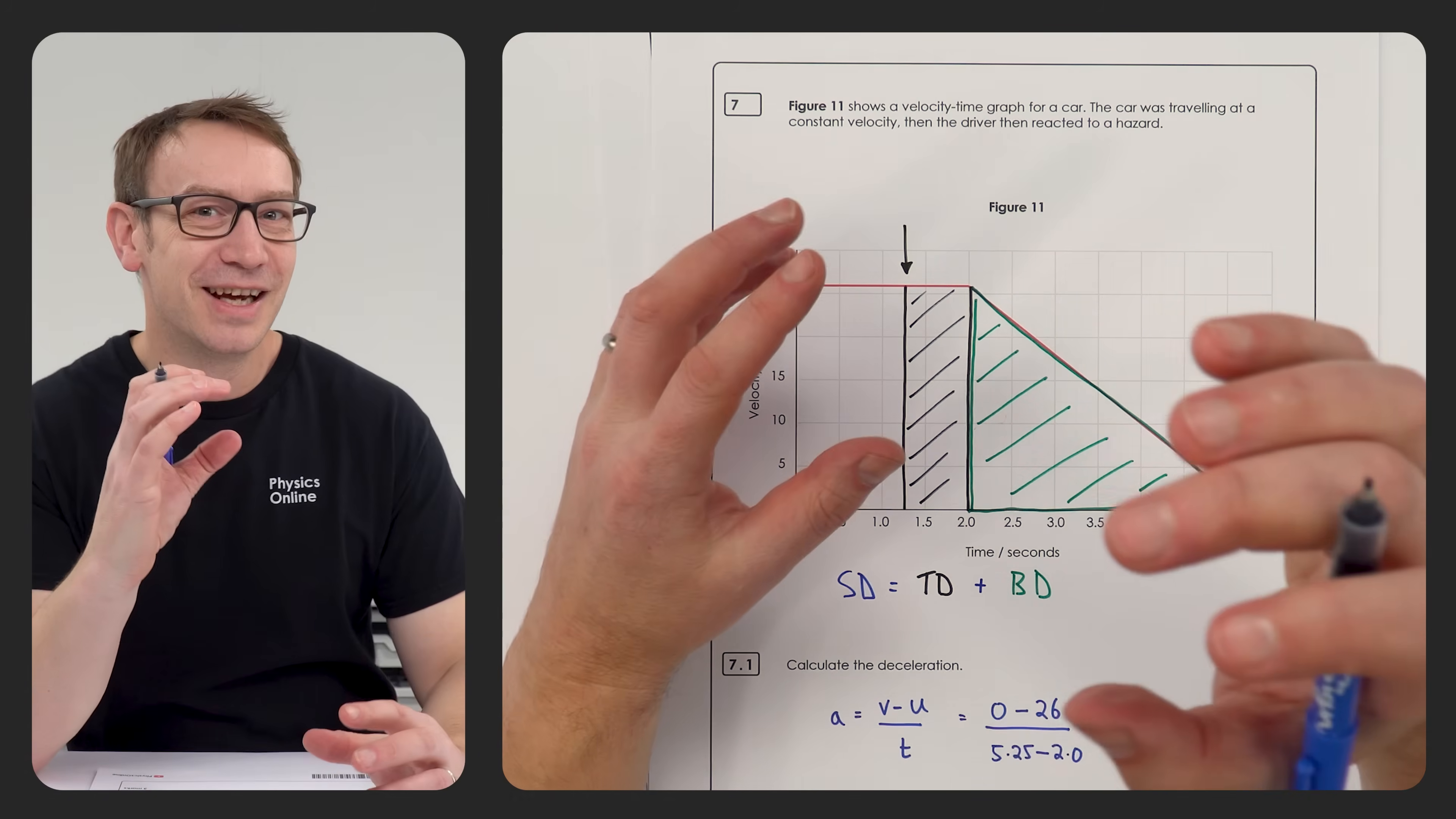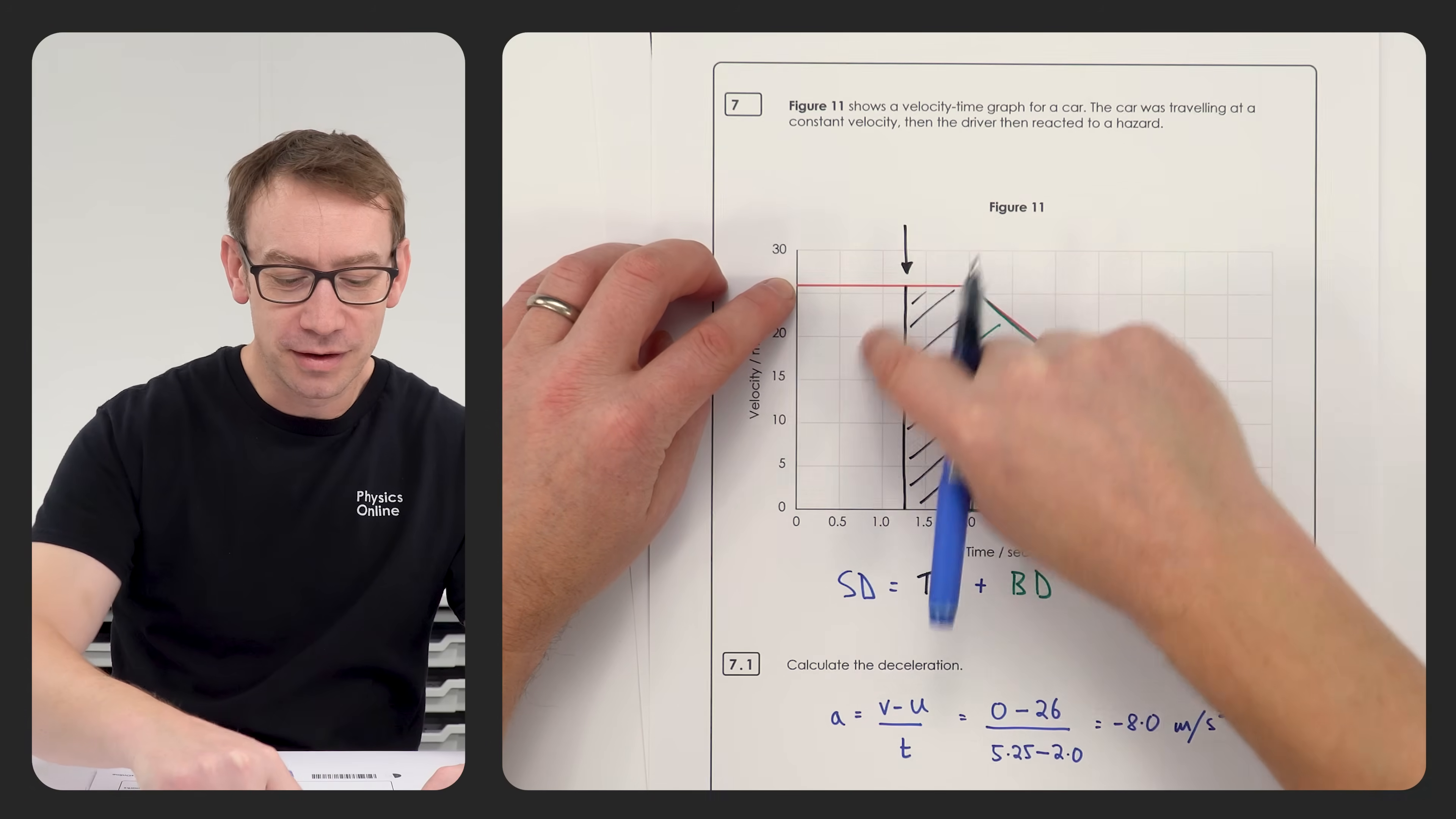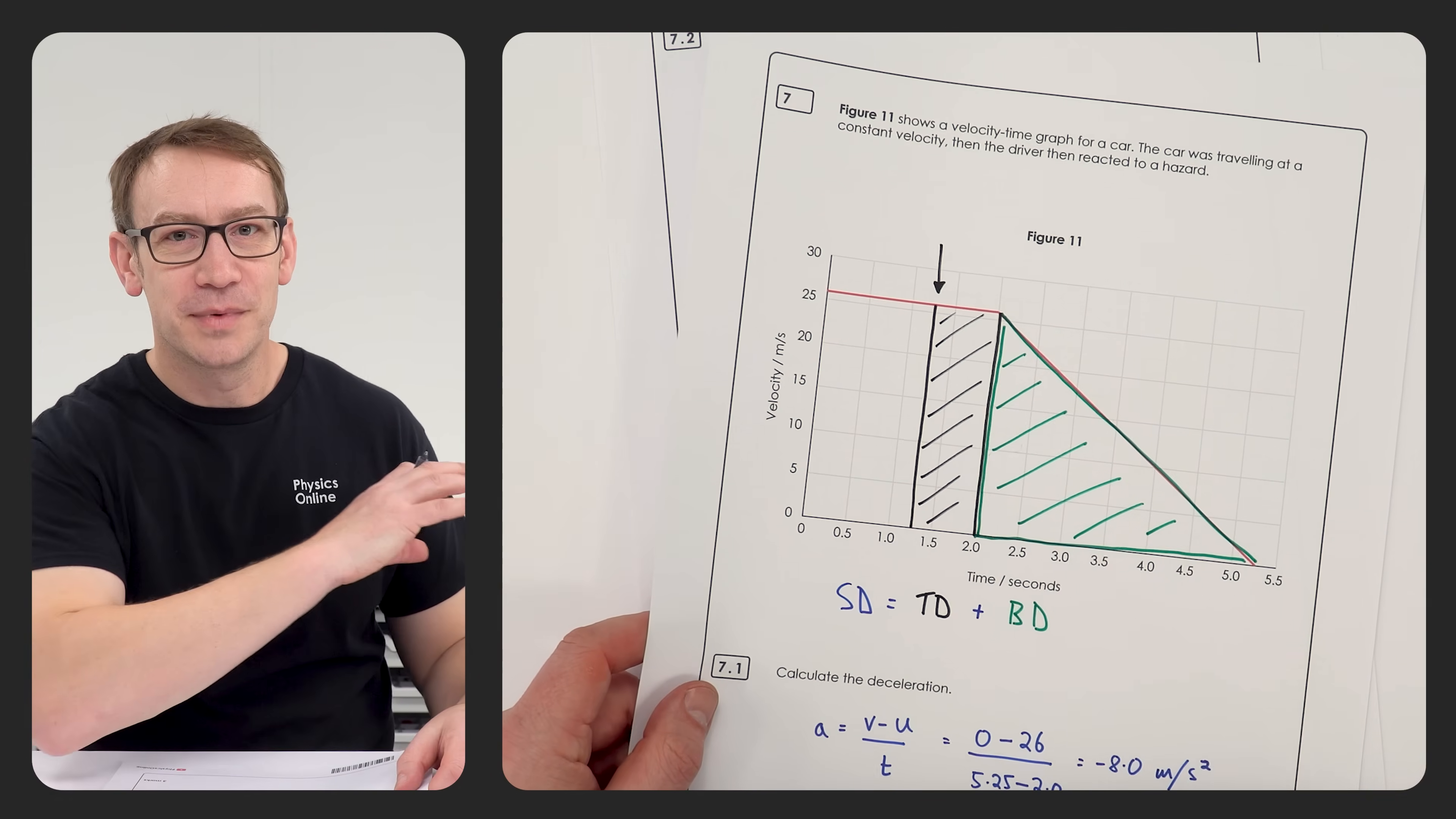And I think that the reason that lots of people found this difficult was because they thought that this graph just showed the time from when they first saw the hazard, rather than this initial region when the car is just traveling at a constant velocity. So now we've kind of basically drawn on the graph, which is something I would urge you to do.